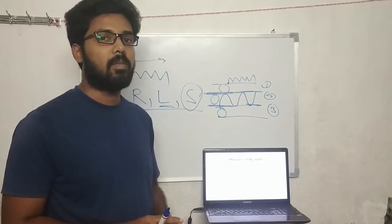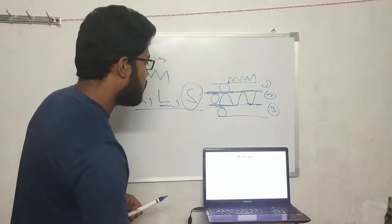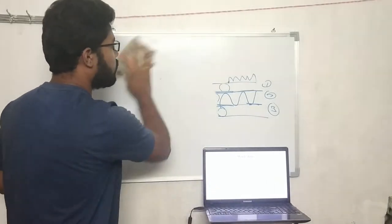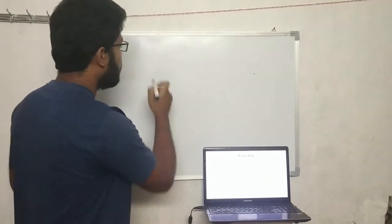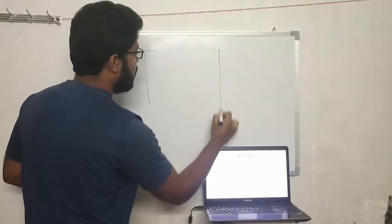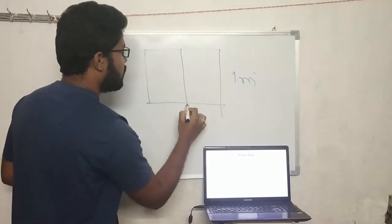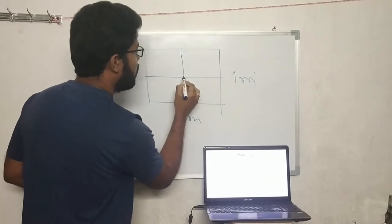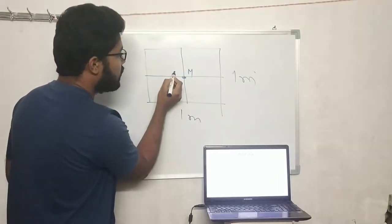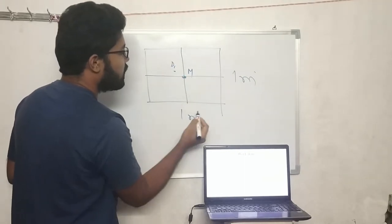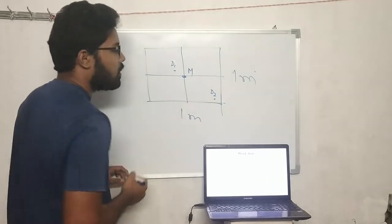For my work, I used the software ABAQUS, a finite element method analysis software. I considered a model whose size is one meter by one meter. For excitation, the loading is applied at the midpoint M, and I have considered two damage locations: D1 just near to the midpoint and D2 just near to the boundary.